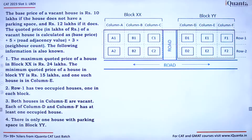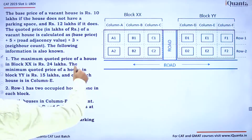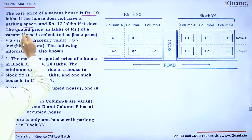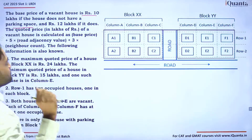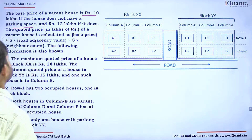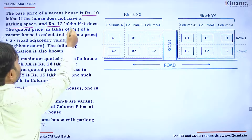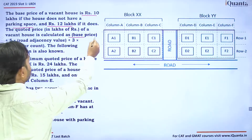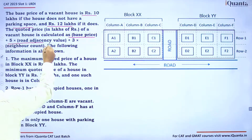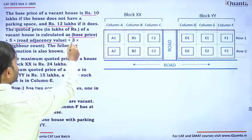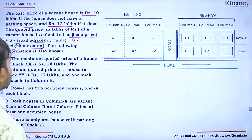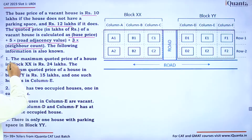The base price of a vacant house is 10 lakhs if it does not have parking, and 12 lakhs if it does. The quoted price of a vacant house is calculated as: base price + 5 × road adjacency + 3 × neighbor count.